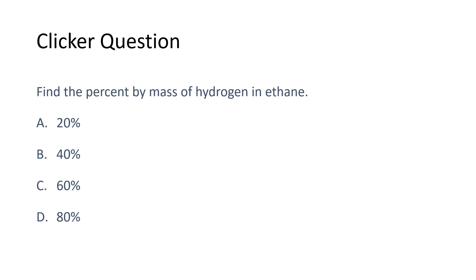To find the percent by mass of hydrogen in ethane, we can do something very similar to what we just did. Again, on that previous slide, ethane was C2H6. The molar mass of ethane was 30.